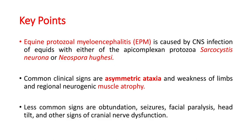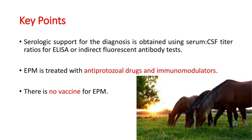Key points: EPM is caused by CNS infection of equids with either the apicomplexan protozoan Sarcocystis neurona or Neospora hugesii. Common clinical signs are asymmetric ataxia and weakness of limbs and regional neurogenic muscle atrophy. Less common signs include seizures, facial paralysis, head tilt, and other cranial nerve dysfunction. Serologic support uses serum:CSF titer ratios for ELISA or indirect fluorescent antibody tests. EPM is treated with antiprotozoal drugs — mainly ponazuril and diclazuril — and immunomodulators. No vaccine is currently available.